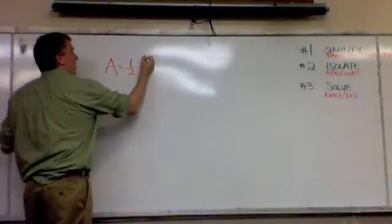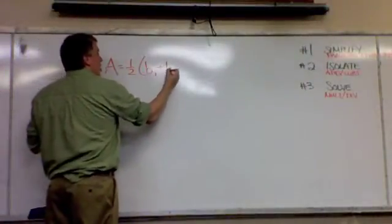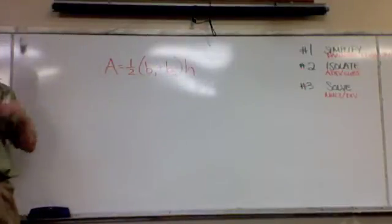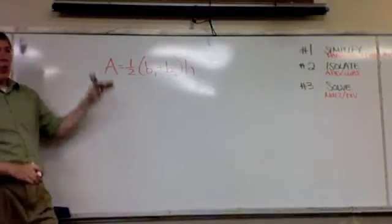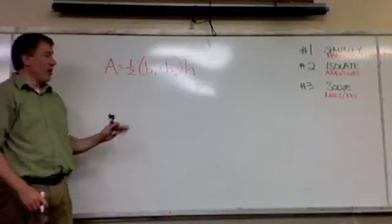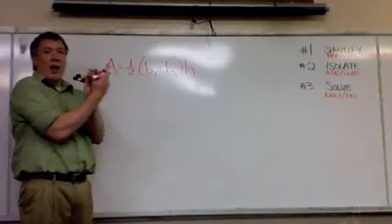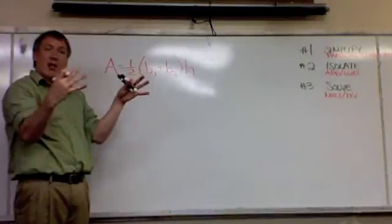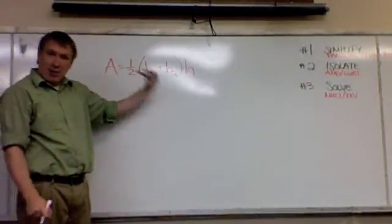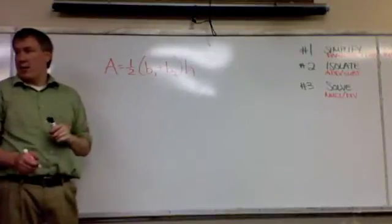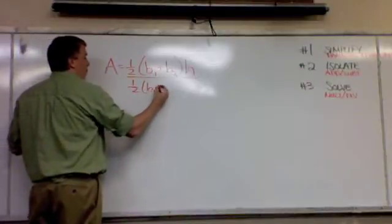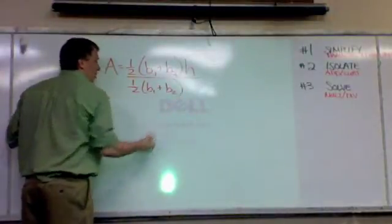A equals 1/2 B1 plus B2 times H. They want you to solve for H, which means get it by itself. And here's the thing that I see. I see it's 1/2 times something times H. Just in parentheses, it's still one number. There might be two things inside but it still represents only one number. So if I have 1/2 times times, how do I get rid of times? Divide. So I'm going to divide.